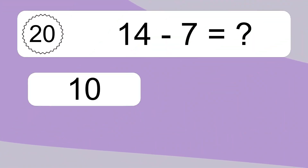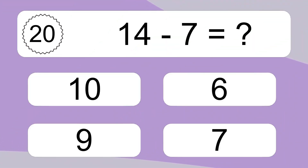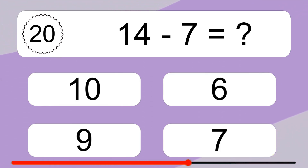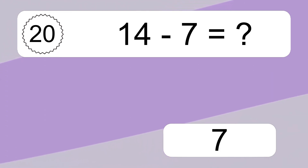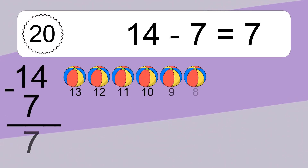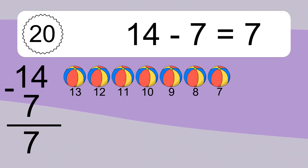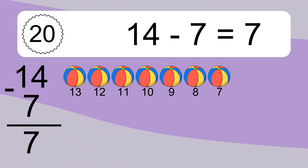14 minus 7 equals what? 14 minus 7 equals 7. Let's count it: 13, 12, 11, 10, 9, 8, 7.